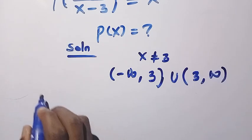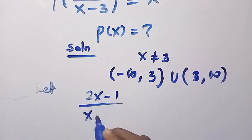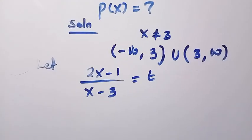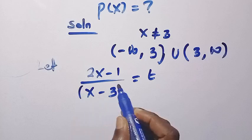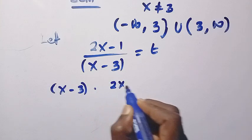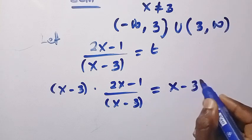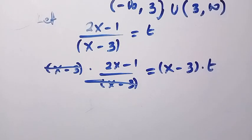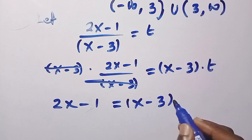After that, we apply the substitution method. Let the whole expression (2x minus 1) divided by (x minus 3) equal t. So we multiply both sides by (x minus 3). On the left side, (x minus 3) cancels with the denominator, and we have 2x minus 1 equals (x minus 3) multiplied by t.